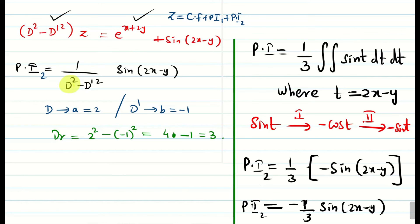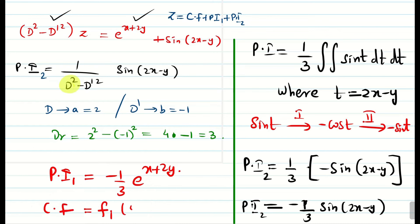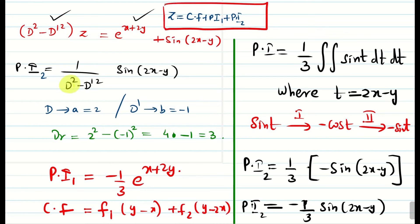Similarly you can find PI₁ which is Type 1 — PI₁ = -1/3 · e^(x+2y). The CF is f₁(y - x) + f₂(y + x). The final answer is z = CF + PI₁ + PI₂. Substitute all values to get the complete general solution. Thanks for watching — please subscribe to the channel and share with your friends. See you in the next video.